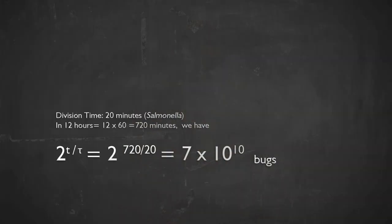Let's put in actual numbers using Salmonella, which is relevant for cooking because too many Salmonella will make you sick. Salmonella has a division time of about 20 minutes under reasonable growth conditions. Starting from one Salmonella on your piece of cheese, the number after time t is 2^(t/τ) where τ = 20 minutes. After 12 hours — which is 36 generations — you have 2^36, which is 7 × 10^10 bacteria on your cheese.